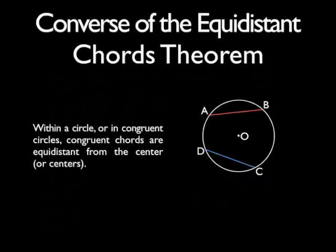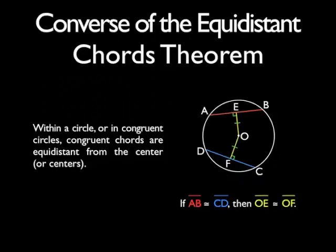Of course, the converse is also true. Within a circle or within congruent circles, congruent chords are equidistant from the center or centers. So here we have chords AB and CD, and they are congruent. So that means that segment OE and segment OF will also be congruent.